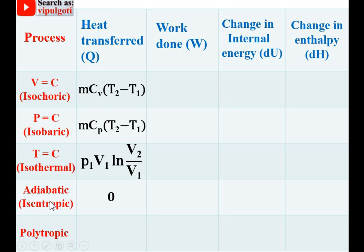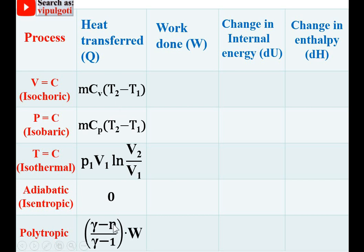For the adiabatic process, heat transfer is always 0 — this is a very important point that can be asked in viva or competitive exams. Always keep in mind that for adiabatic process Q = 0. For the polytropic process, heat transfer is [(γ − n)/(γ − 1)] × W, where W is the work done during the polytropic process, and γ is the adiabatic index, always 1.4 for air.